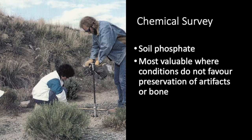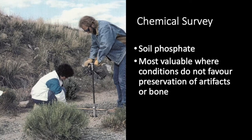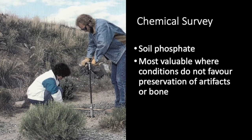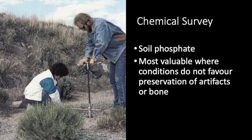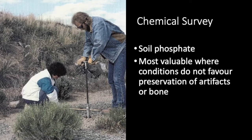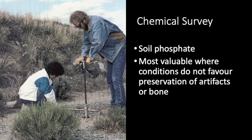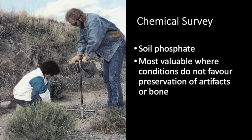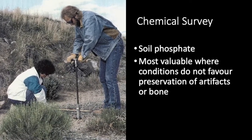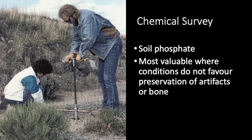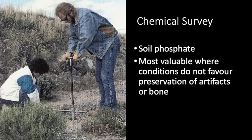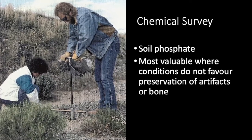In some regions, a very important archaeological field method is chemical survey. This involves analyzing regularly spaced soil samples for chemical signatures of human occupation, of which the most important one is elevated phosphate levels.